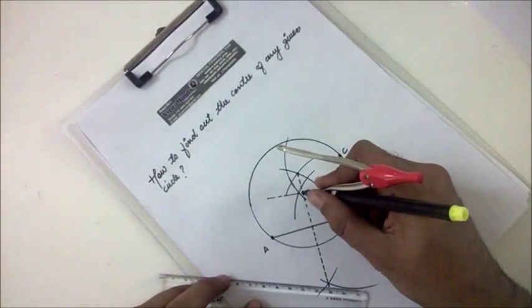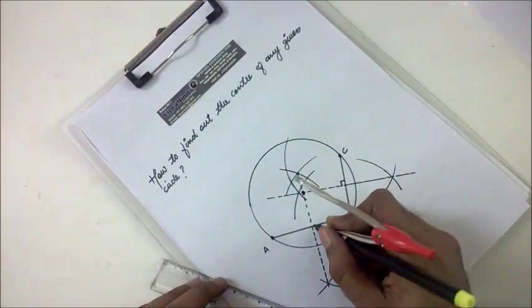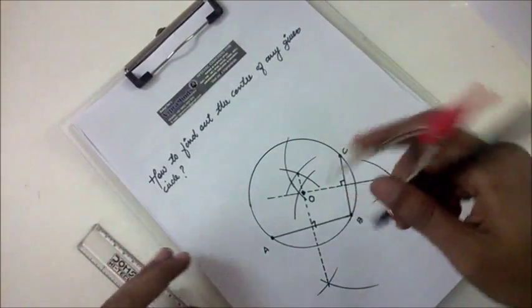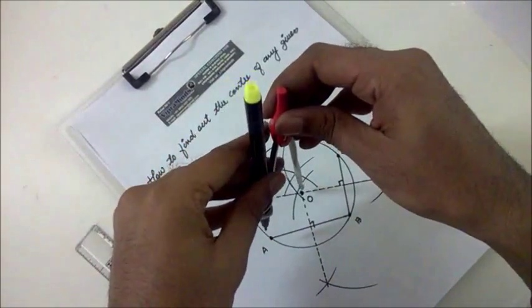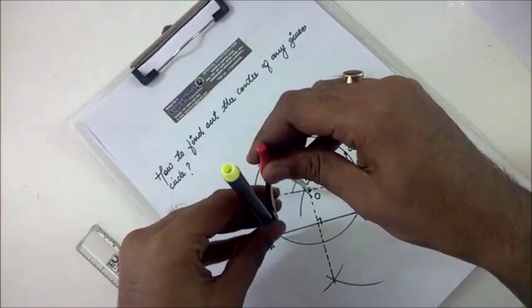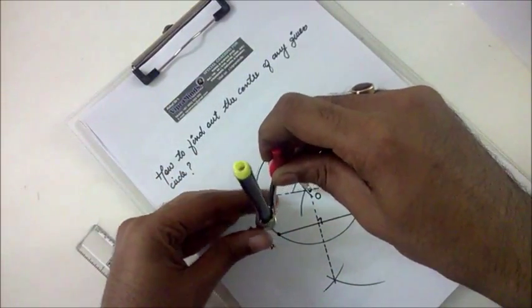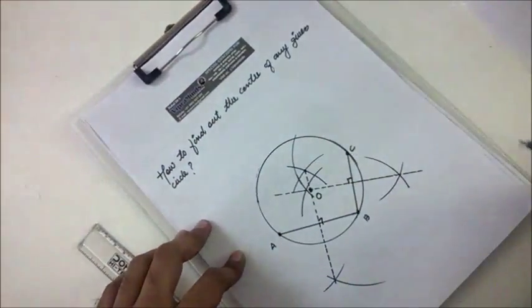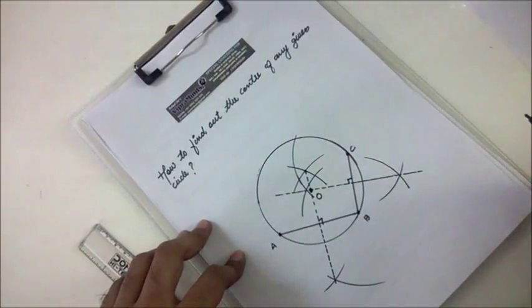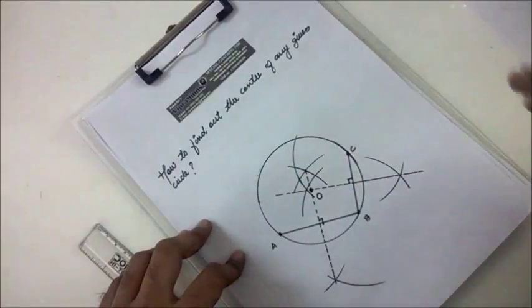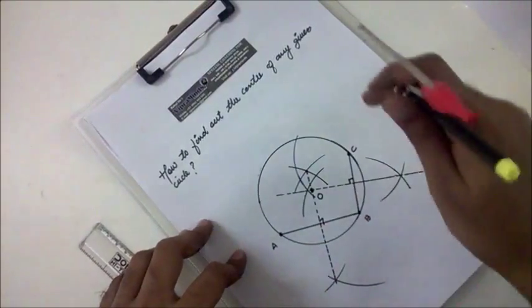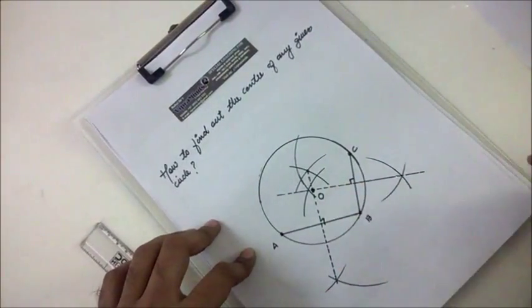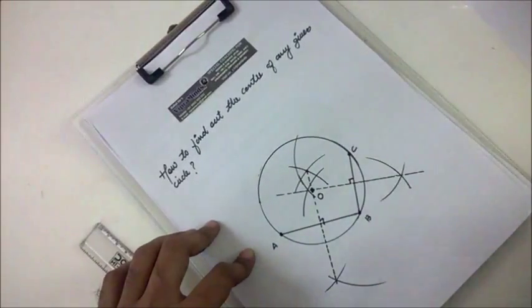The intersection point of these two perpendicular bisectors will be the center of this circle. You can check — suppose this is the center O, then OA equals the radius. So this point is the center of the circle. We take any three points on the circle, join them, draw the perpendicular bisectors, and the intersection of the perpendicular bisectors will be the center of that circle.